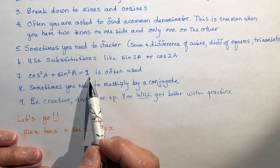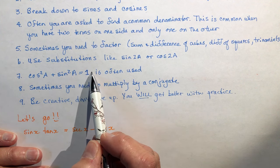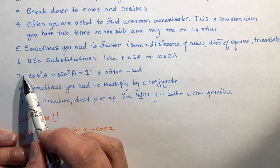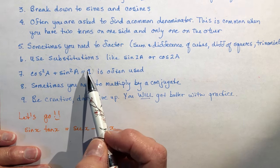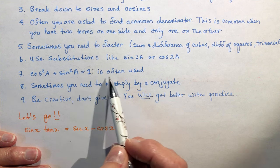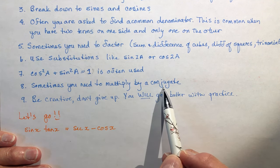cos²a + sin²a = 1 is often used. The variations on this, you might be replacing one with this or replacing this with a one. And you'll go, oh, that was so easy. Why didn't I see it? So watch out for that one. And sometimes you need to multiply by a conjugate.